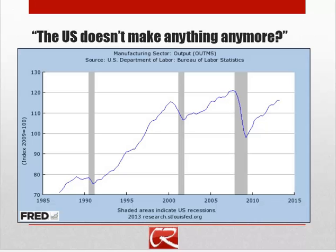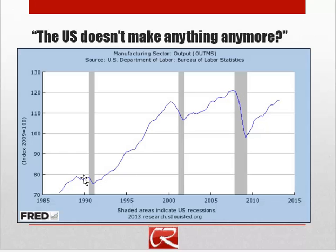There's a popular belief that the U.S. doesn't make anything anymore. What this chart shows is what's happened to manufacturing output over time. Starting from the mid-to-late 80s, manufacturing output grew all the way up until the recessions — shown as shaded bars — during which output declines. Since the most recent recession ended, manufacturing output has actually increased quite substantially, up about 15%, and has almost recovered to its pre-recession peak. Even smoothing out recessions, we're hitting a slightly higher peak after each recession than before it.